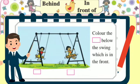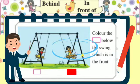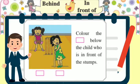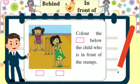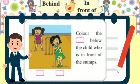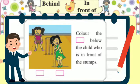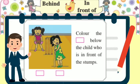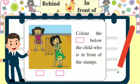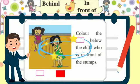Let's find out — search and color the box. In the picture there are two children playing cricket. Let's color the box below the child who is in front of the stumps. Let's find out and color the box.